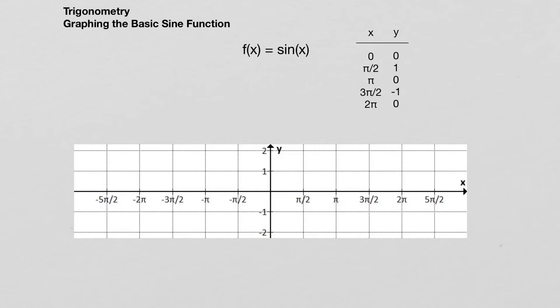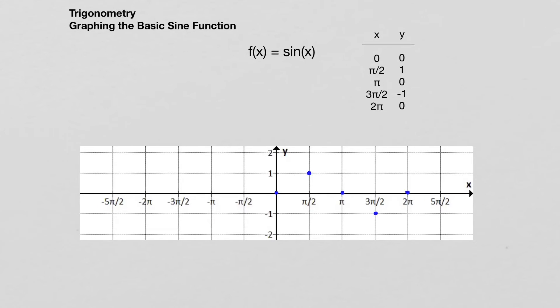I've got my five points that I'm going to graph, so now I'm going to show those on the axes that I have here. We've got zero zero, pi over two one, pi zero, three pi over two negative one, and then two pi is zero again.